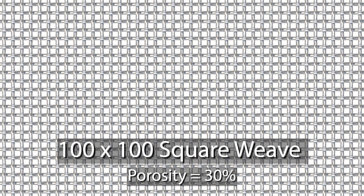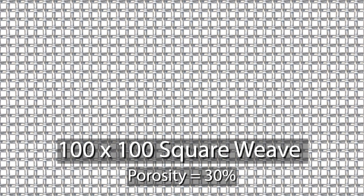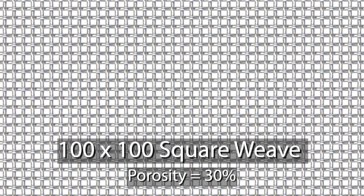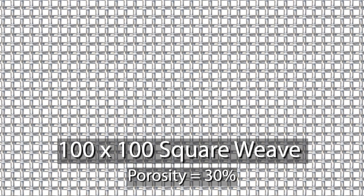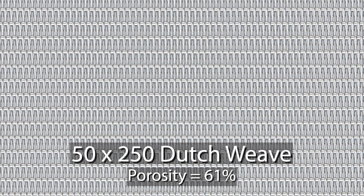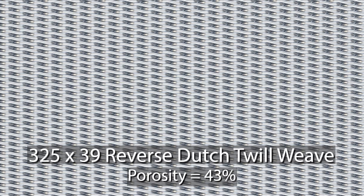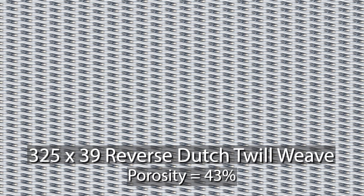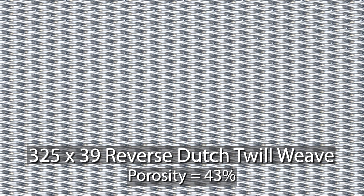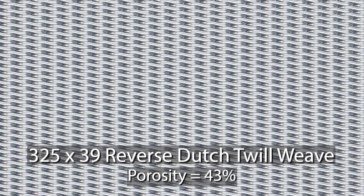The square weave has the lowest porosity because of its large wire diameter, but still has a reasonable surface area for adherence. The Dutch weave has a good surface area with the greatest porosity, while the reverse Dutch weave has the greatest surface area and a lower porosity. The many wires per inch means it's the most expensive.